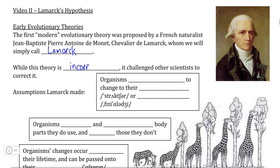Even though Lamarck was proven incorrect due to some fairly glaring misunderstandings about how evolutionary characteristics are passed on, his theory acted as an important stepping stone to understanding how the modern Darwinian model of evolution is actually more correct.